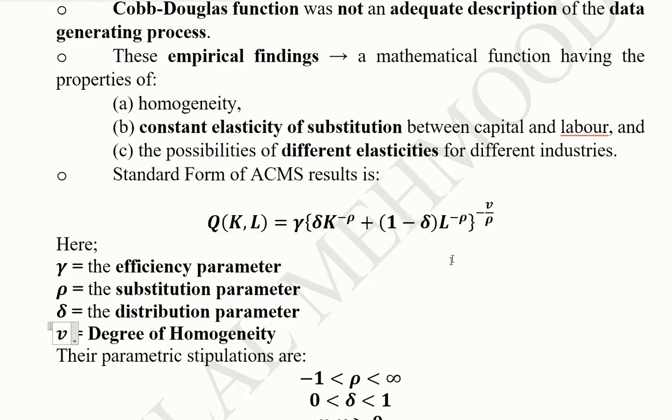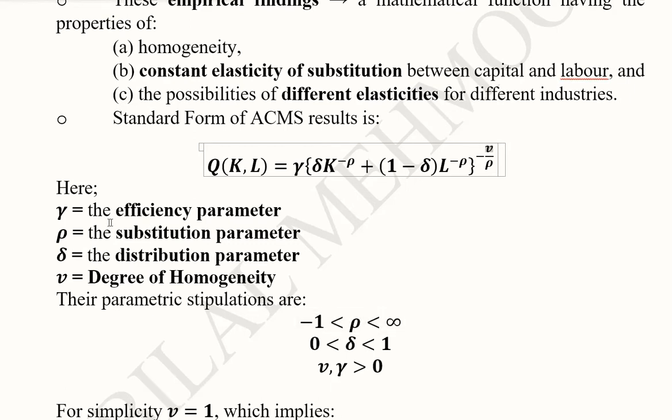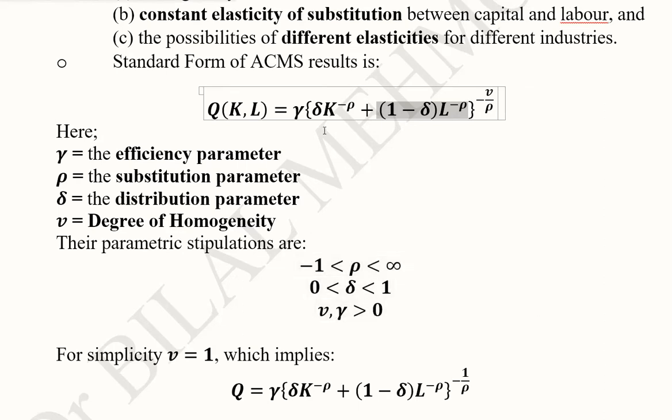We have ν, the degree of homogeneity, which allows us to test homogeneity and returns to scale. Here are the parametric stipulations: the substitution parameter ρ ranges from -1 to ∞, and the distribution parameter δ is between 0 and 1. If δ = 1, then 1 - δ = 0, excluding labor from the production function.